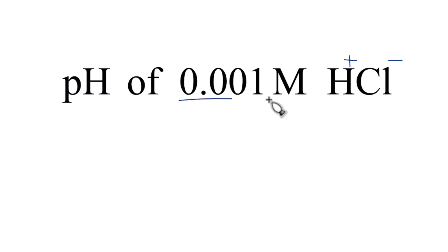So we'll have 0.001 molar HCl, but we'll have 0.001 molar H+ and 0.001 molar Cl- ions there.